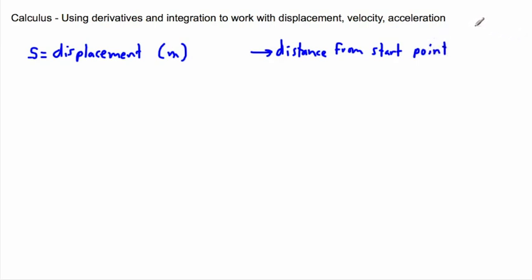Here's a quick physics lesson: let's say I start walking and go south one meter, then east one meter, then north one meter. My distance traveled is one plus one plus one, which is three meters. But my displacement is only one unit — how far I am from where I started. So if I walked a full loop and returned home, my distance would be four meters but my displacement would be zero.